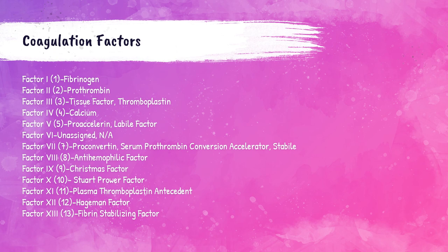Factor 1 is fibrinogen. Factor 2 is prothrombin. Factor 3 is tissue factor, also called thromboplastin. Factor 4 is calcium. Factor 5 is proaccelerin, also called labile factor. Factor 6 is unassigned. Factor 7 is proconvertin, also known as serum prothrombin conversion accelerator or stable factor. Factor 8 is anti-hemophilic factor. Factor 9 is Christmas factor. Factor 10 is Stuart-Prower factor. Factor 11 is plasma thromboplastin antecedent. Factor 12 is Hageman factor. And factor 13 is fibrin stabilizing factor. This is rote memorization that you do need to know.